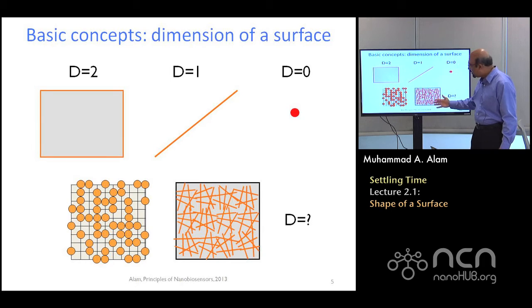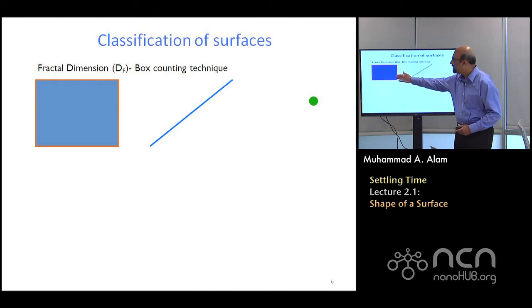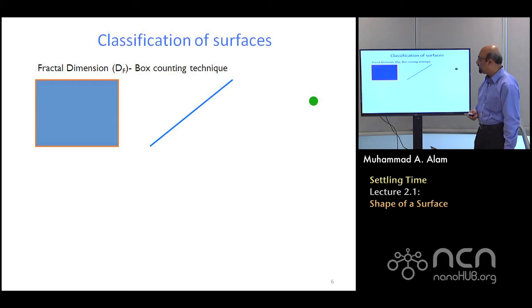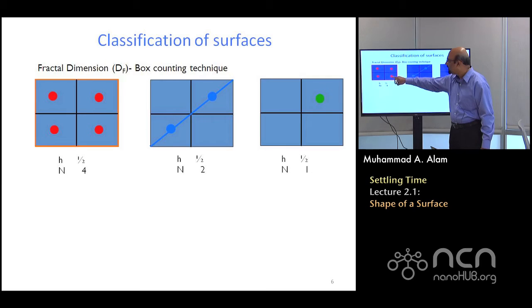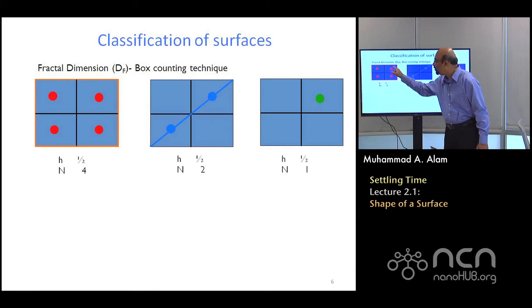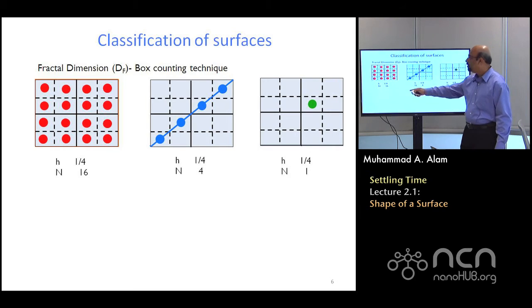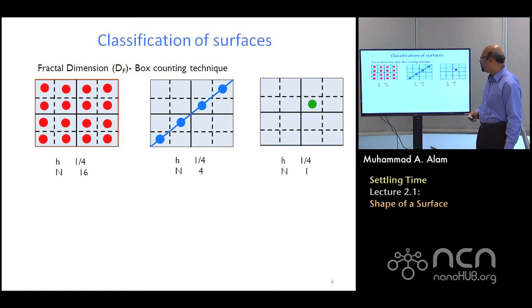It's neither a planar surface because the whole thing isn't covered, nor is it a single line. So is the definition of the surface completely undefined in this case? It turns out that's really not the case. Let me show you how it works. Let's take a surface and put it in a grid. When you have a planar surface and divide it by a factor of two, all four cells will be occupied. In a line, only two of the four will be occupied, and for a dot — this green dot — only one of them is occupied. Divide it one more time: all occupied on the surface, only four occupied in the line, and still just the single one occupied for a dot.